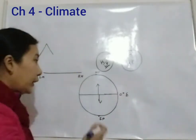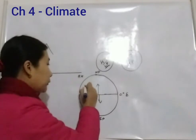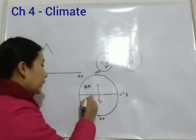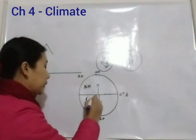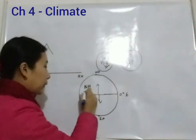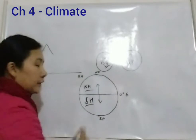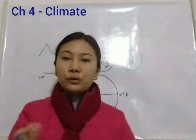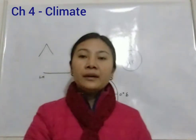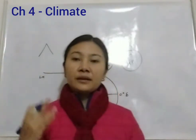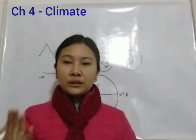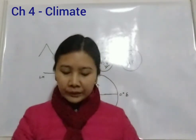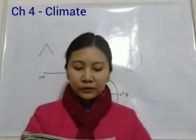The Earth has two hemispheres: the Northern Hemisphere and the Southern Hemisphere. The equator divides the Earth into the Northern Hemisphere above it and the Southern Hemisphere below it.